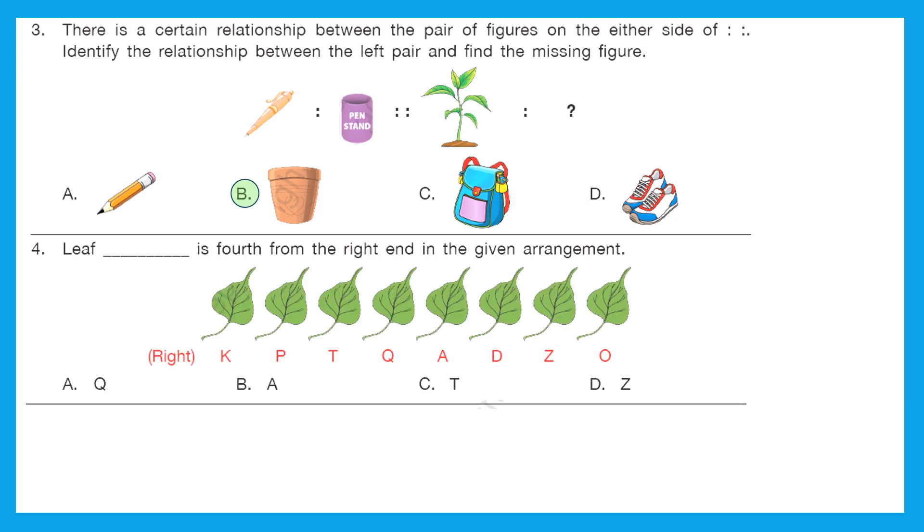Question 4: leaf dash is fourth from the right end in the given arrangement. So fourth from the right end. So let's find out which is the right end. It is already written over there. Now let's find the leaf. First is K, second is P, third is T and fourth is Q. So we got our answer. The right answer is option A.